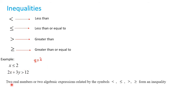By definition: two real numbers or two algebraic expressions related by the symbols less than, less than or equal to, greater than, or greater than or equal to form an inequality. Two real numbers means constants can appear, for example 1 < 2 is also an inequality. Algebraic expressions contain variables, such as x ≤ 2 or 2x + 3y > 12. The left-hand side and right-hand side are related by any one of these four inequality symbols.